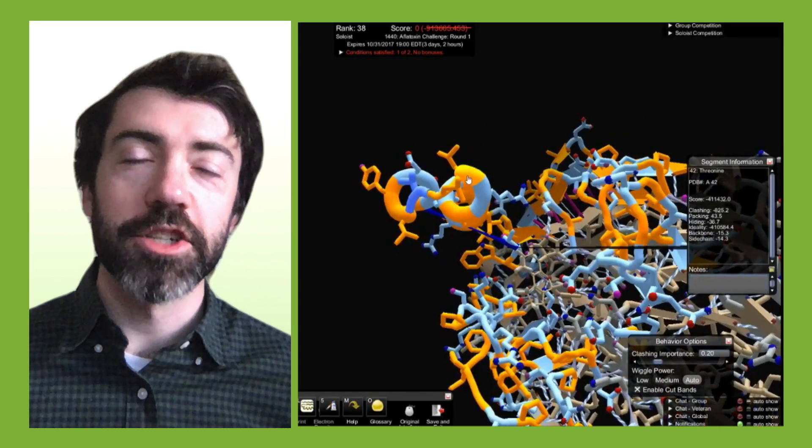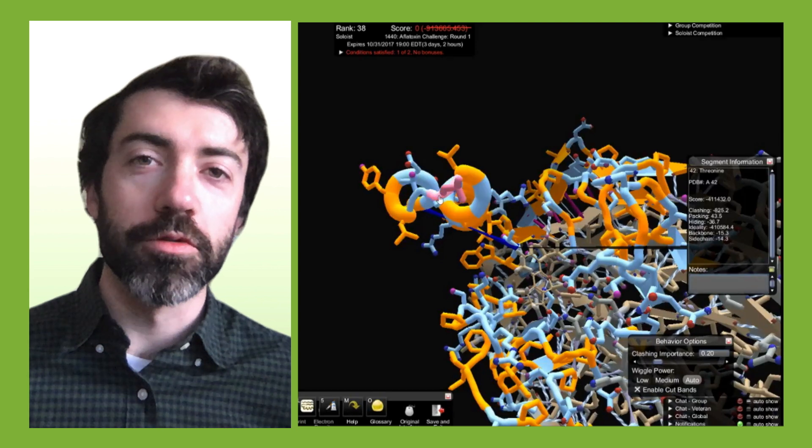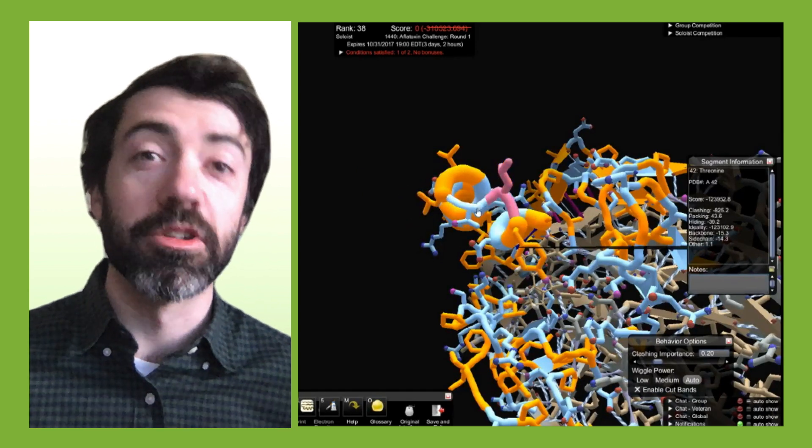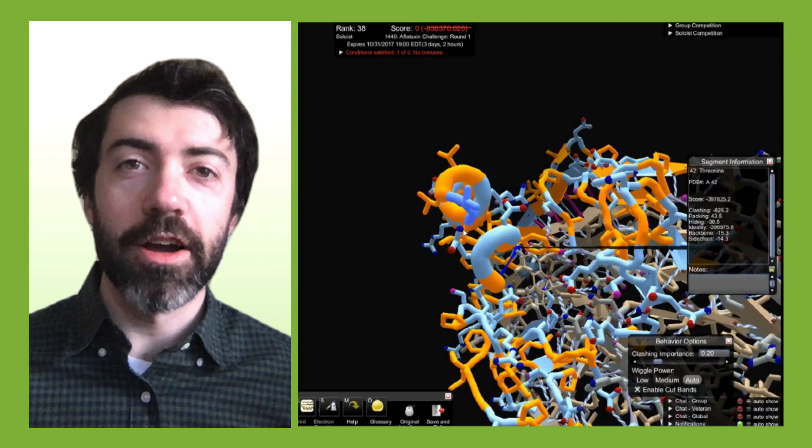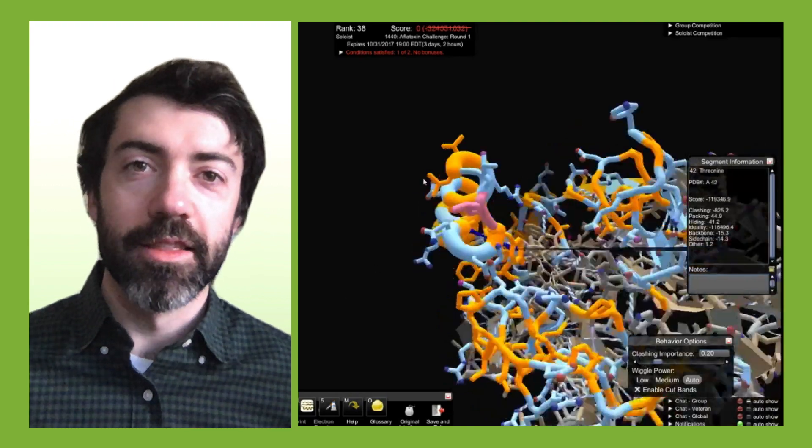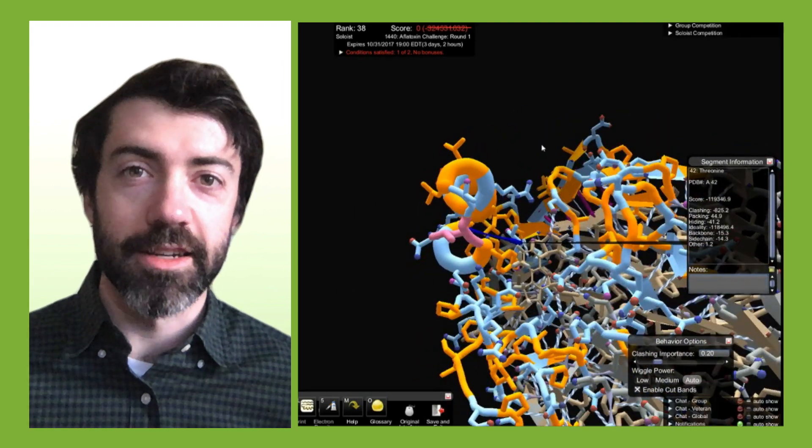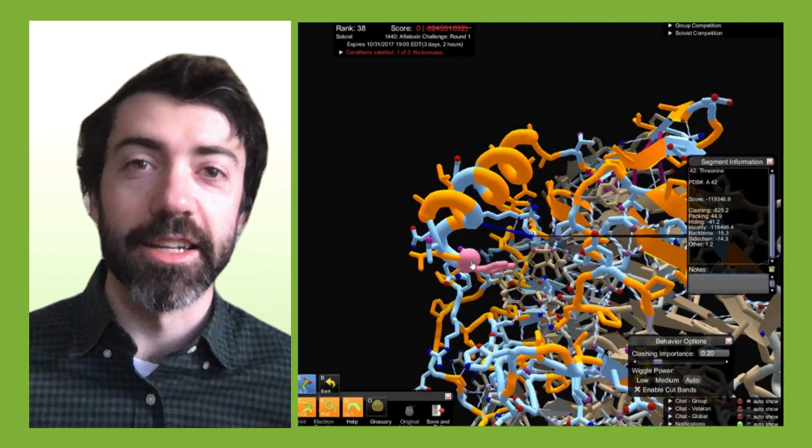In the most recent puzzles, we are challenging you to refold loops that were designed in previous folded puzzles. If we can figure out how these loops are misfolding, then we can correct the designs so that they are active against aflatoxin.